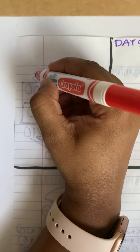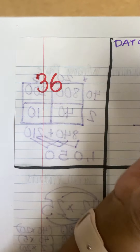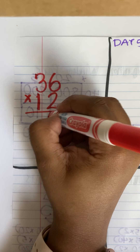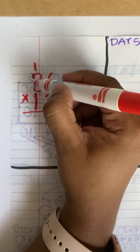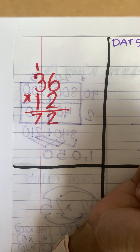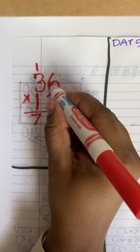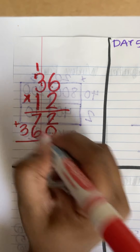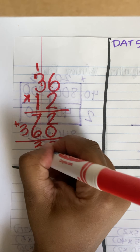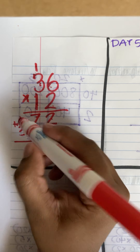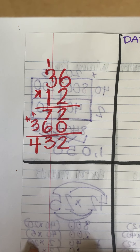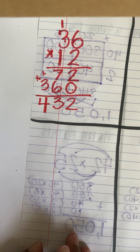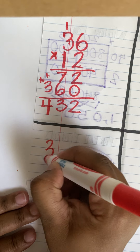Standard algorithm: I have 36 times 12. I know that 2 times 6 is 12 — I'm going to add my one over here in the tens place. 2 times 3 is 6, plus this one is 7. Then I'm going to go to my next line: 1 times 6 is 6, and 1 times 3 is 3. I'm going to add these together: 2 plus 0 is 2, 6 plus 7 is 13, carry my one over here to my hundreds. Then I have 300 plus 100 and that's 432. Therefore my product is 432 ounces of cookie dough baked.